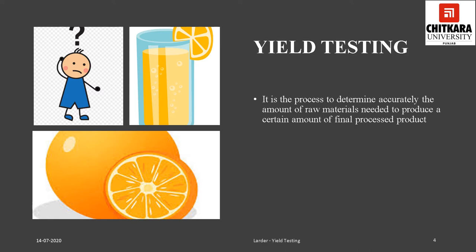A yield test is performed on each item with respect to the product that needs to be made from that item. For example, a yield test may be done for oranges for orange juice, and for wedges, segments, and slices separately. Yield testing is a very time-consuming but important process as it helps the establishment to set its own standard yields for each item purchased. This helps to decide whom to purchase from, determine accurately what output each item gives, and set purchase standards for each item.